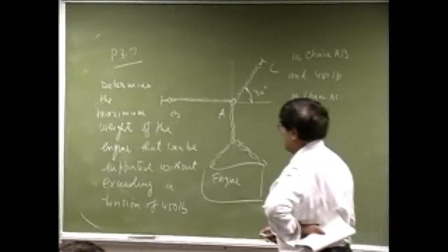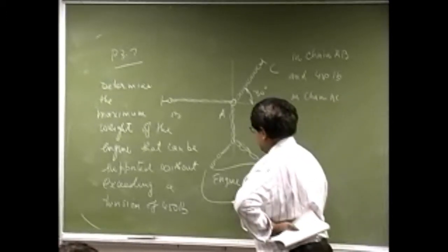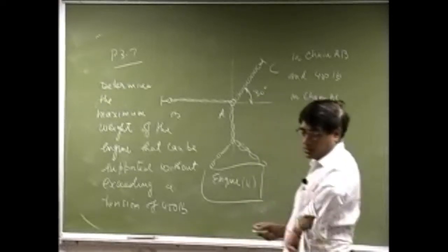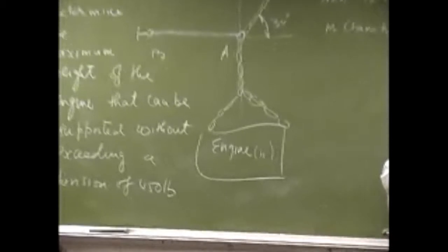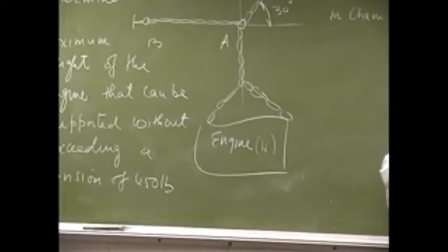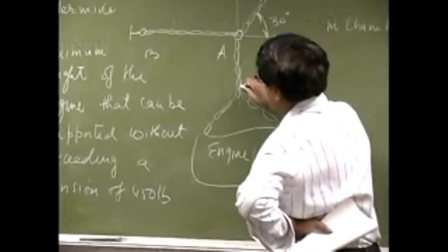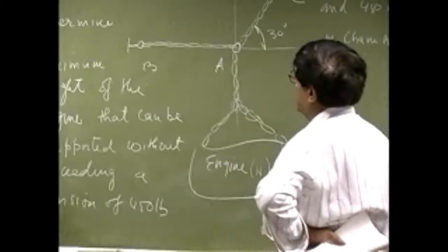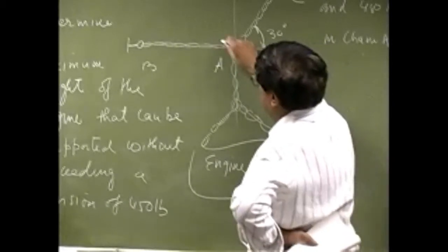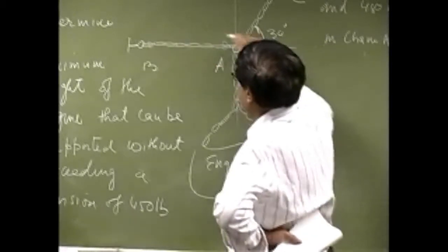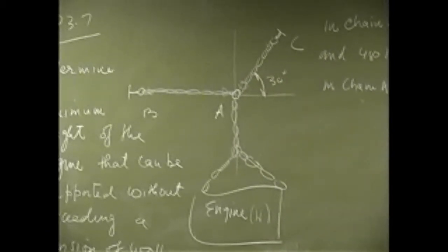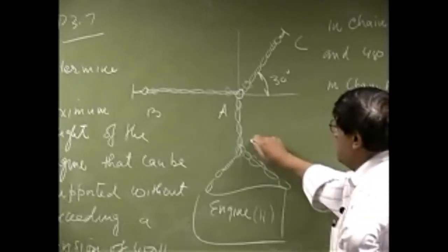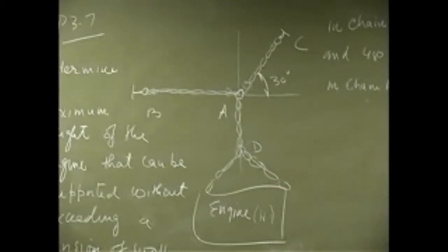Let's say the weight of the engine is W. Capital W is the weight of the engine, which is unknown at this point. We pick this point, this point, this point, and this point, and draw the free body for all of them. Let's call this point D.